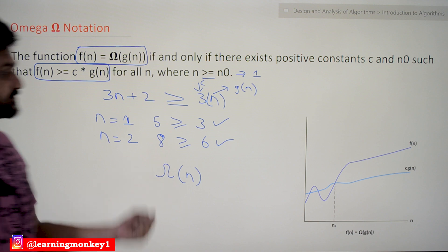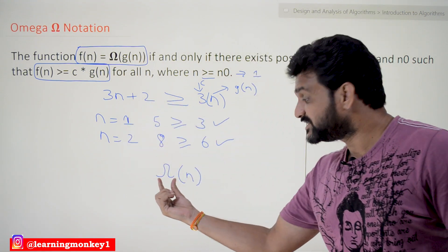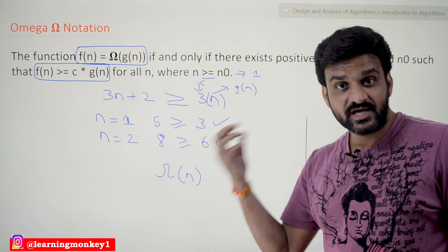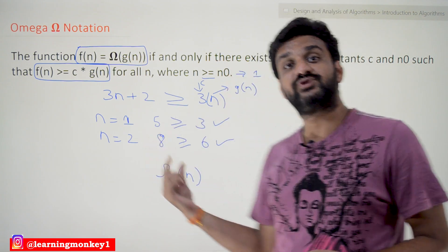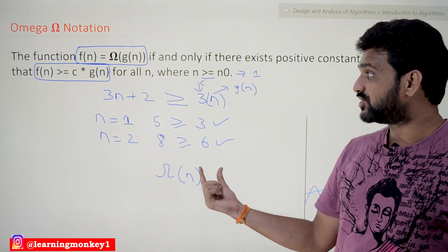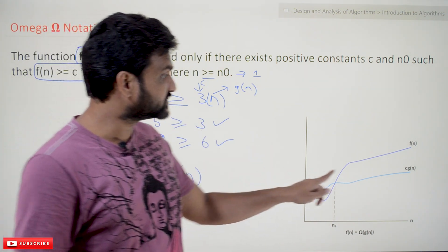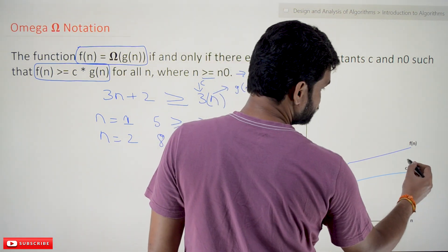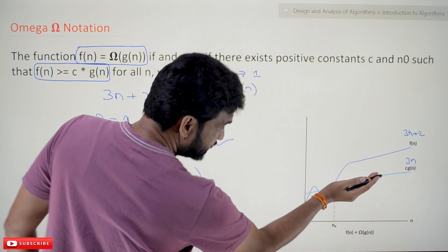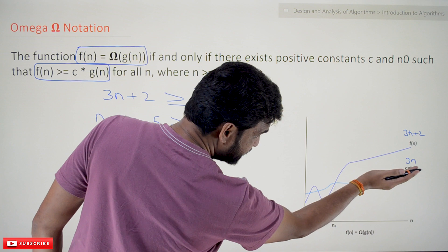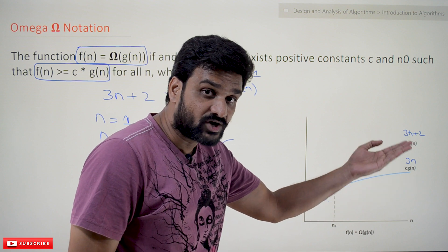Now, what statement is this notation describing? Asymptotic notations are used to describe the behavior of an algorithm. This notation is describing the lower bound. Here, c times g of n is 3n and f of n is 3n plus 2. So f of n will never go below c times g of n — we are getting the lower bound.